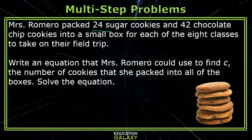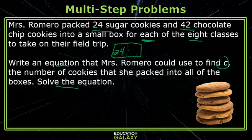Let's try one more. Mrs. Romero packed 24 sugar cookies and 42 chocolate chip cookies in a small box for each of the 8 classes to take on their field trip. Write an equation that Mrs. Romero could use to find C, the number of cookies she packed into all of the boxes, then solve the equation. Here's one box — she put 24 sugar cookies and 42 chocolate chip cookies in it.